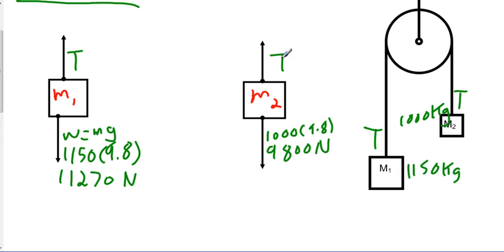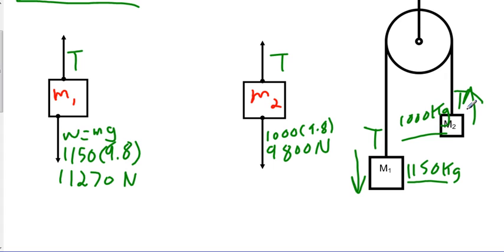Before we begin with our summation equations, we need to set a positive direction. It actually doesn't matter which direction you set as positive, but it's easier if you can make a guess about which direction the system will move. Since M1 is 1150 kg and M2 is 1000 kg, the 1150 kg mass is going to drop down, which means M2 is going to go up. So for M1, down is going to be positive, and for M2, up is going to be our positive direction.